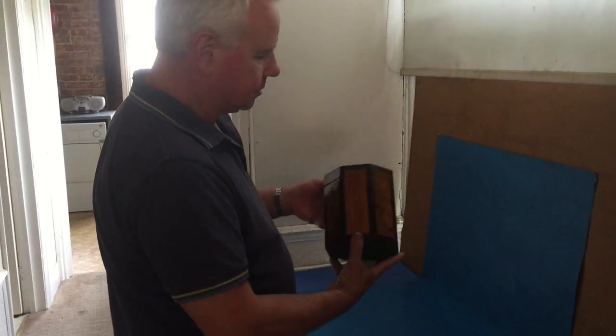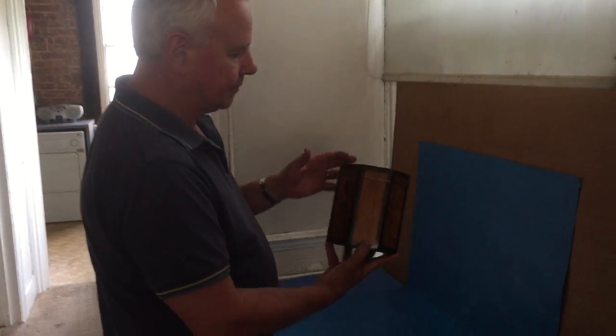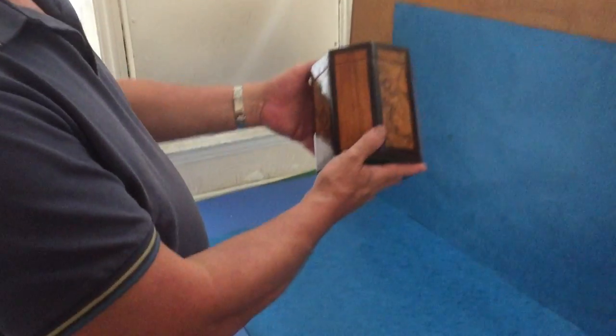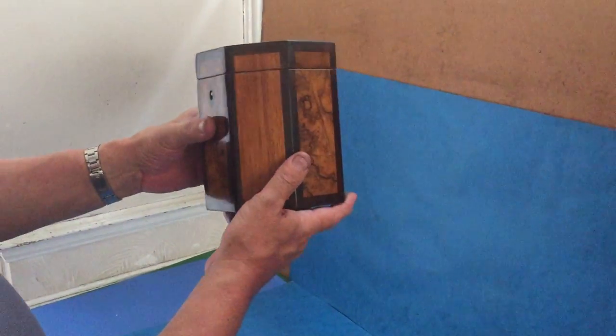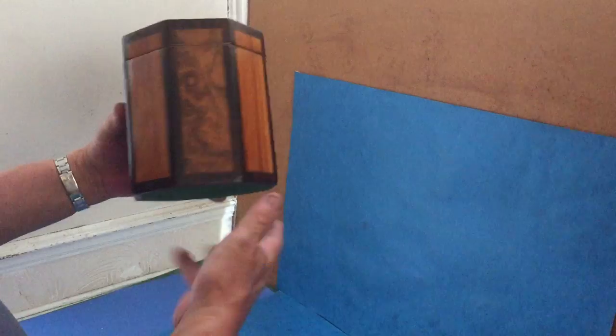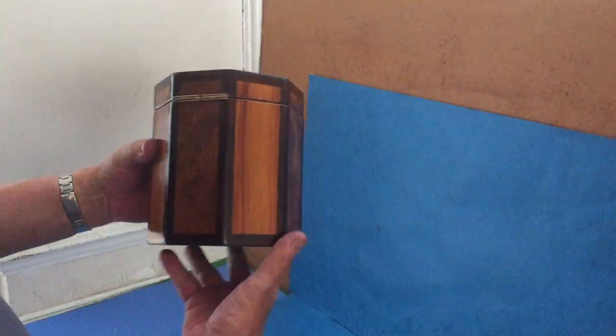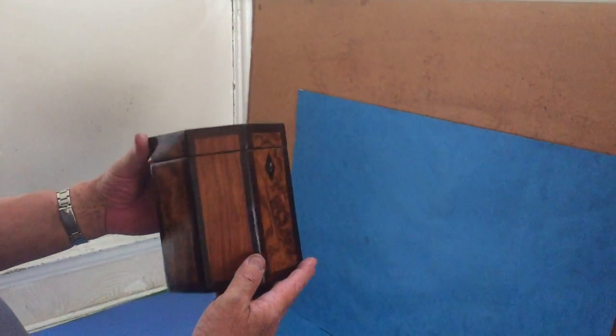This is a wonderful unusual box, it's a tea caddy. It's all done in specimen woods, it's cross-banded in rosewood, and then the actual body woods of burr walnut and tulip wood alternating all the way round. It's a lot taller than your standard tea caddy.